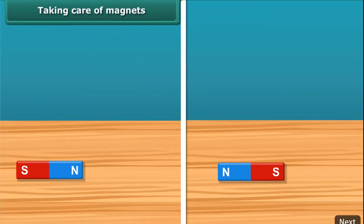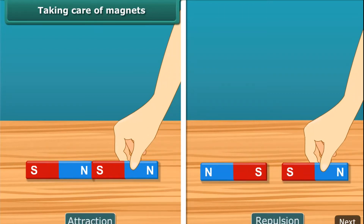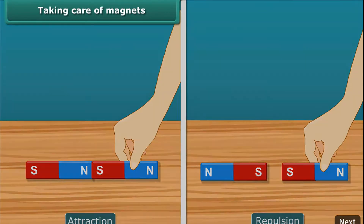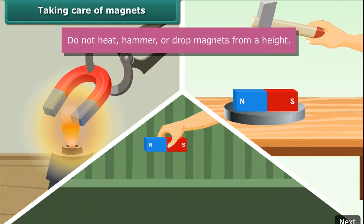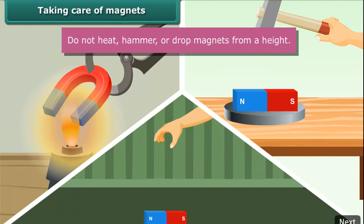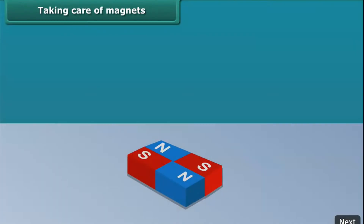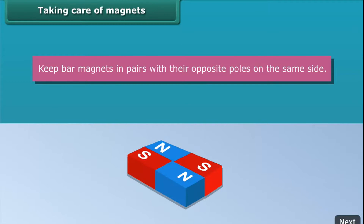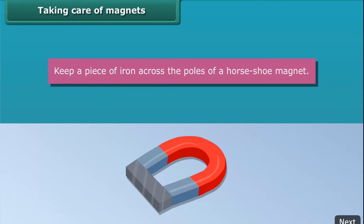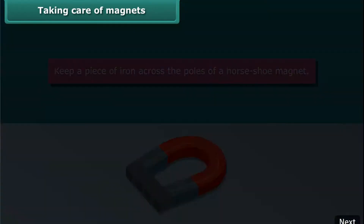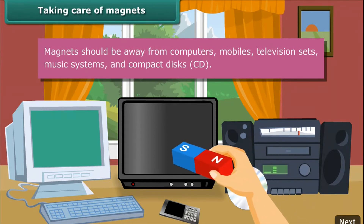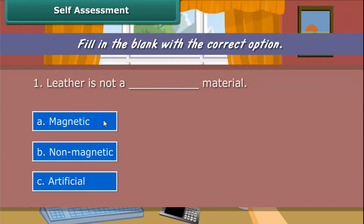Taking care of magnets. To keep magnets safe and in working conditions, follow these guidelines: Do not heat, hammer, or drop magnets from a height — they will lose their property if done so. Keep bar magnets in pairs with their opposite poles on the same side and use wood to separate them. Keep a piece of iron across the poles of a horseshoe magnet. Magnets should be kept away from computers, mobiles, television sets, music systems, and compact discs. Self-assessment: Fill in the blank with the correct option.